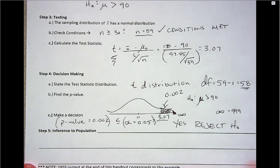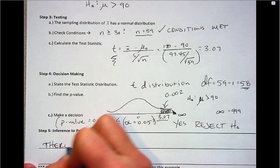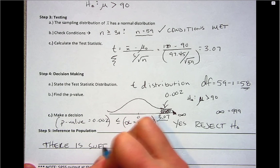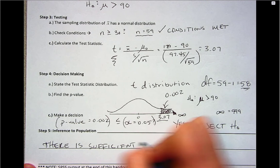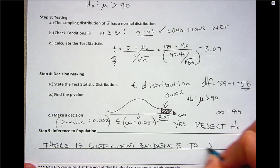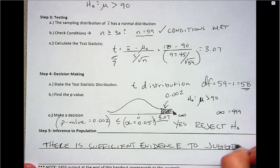So remember when you reject, you start your conclusion in step 5 saying there is sufficient evidence to suggest, and then we restate our alternative in words.